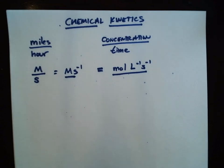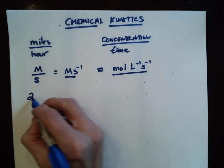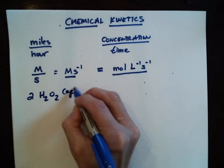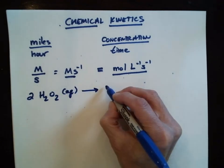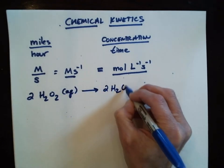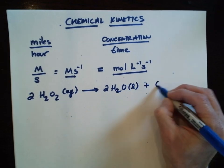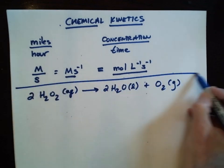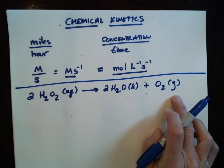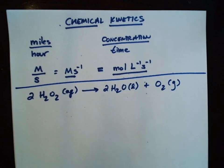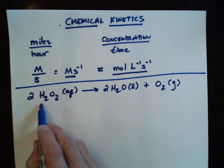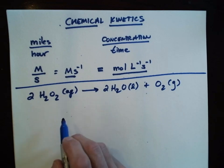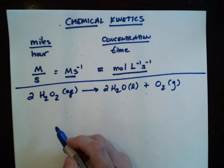Let's say we have this particular chemical reaction: 2H₂O₂ dissolved — hydrogen peroxide — decomposing into water and oxygen gas. Let's say the rate at which the hydrogen peroxide is disappearing is 1 molar per second.